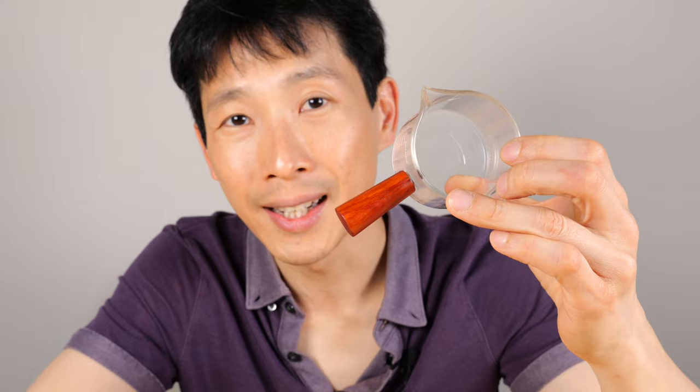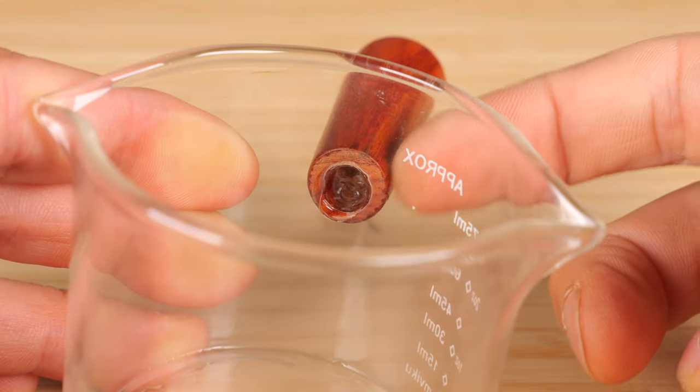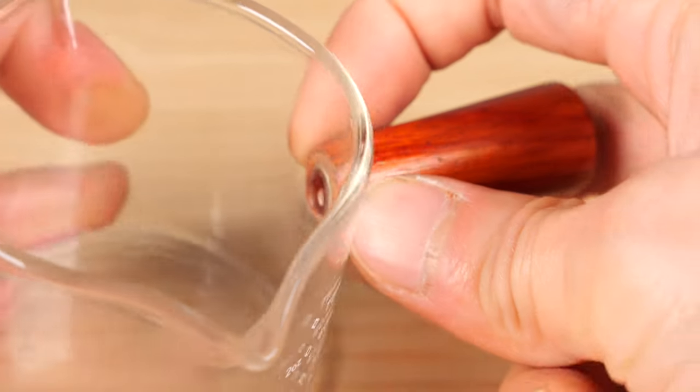Made of borosilicate glass, it means you can shock it with a lot of heat and it won't crack. The glass actually protrudes out and the wood handle catches on there.